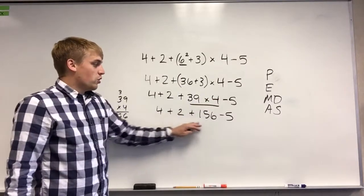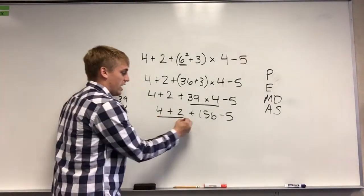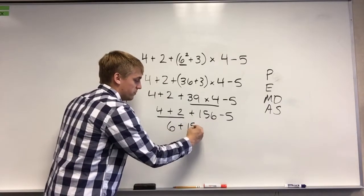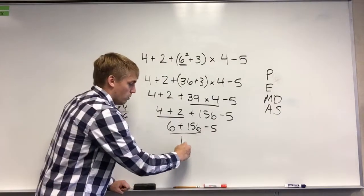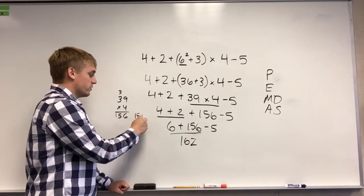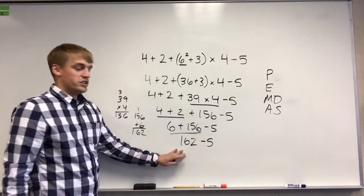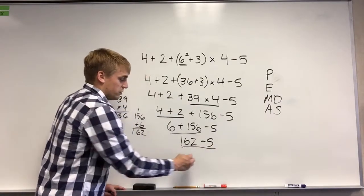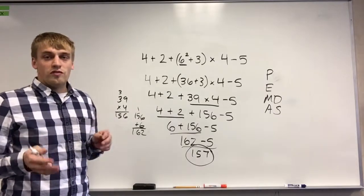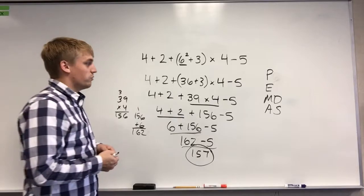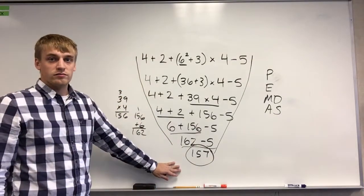There is no multiplication or division left, so we add or subtract. First: 4 plus 2 is 6. Then 6 plus 156 is 162. Finally, 162 minus 5 is 157. Notice that the work kind of funnels down to the correct answer — that's what I want to see when you're doing order of operations problems. Make sure you show every step.